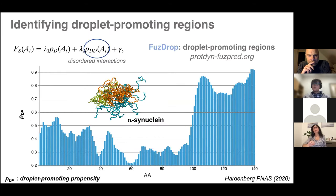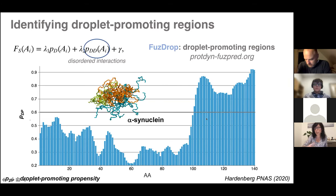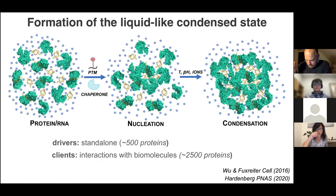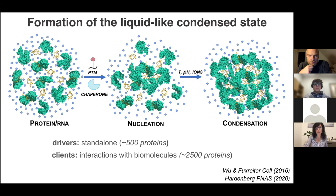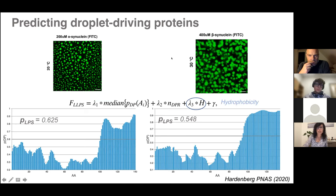Based on the disordered interactions, we could identify the droplet-promoting regions for all known regions that were identified, illustrated here for alpha-synuclein—the C-terminal region of alpha-synuclein can drive droplet formation. However, predicting whether a protein undergoes liquid-liquid phase separation is more difficult: some proteins can do it standalone and spontaneously phase separate, whereas others need assistance from other molecules. Both alpha-synuclein and beta-synuclein have this droplet-promoting region, but beta-synuclein requires a temperature increase to phase separate compared to alpha-synuclein, which does it at 20°C.